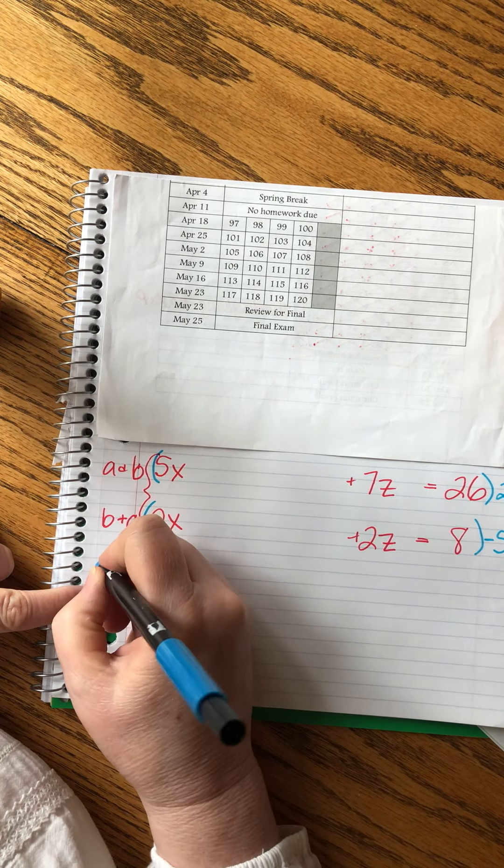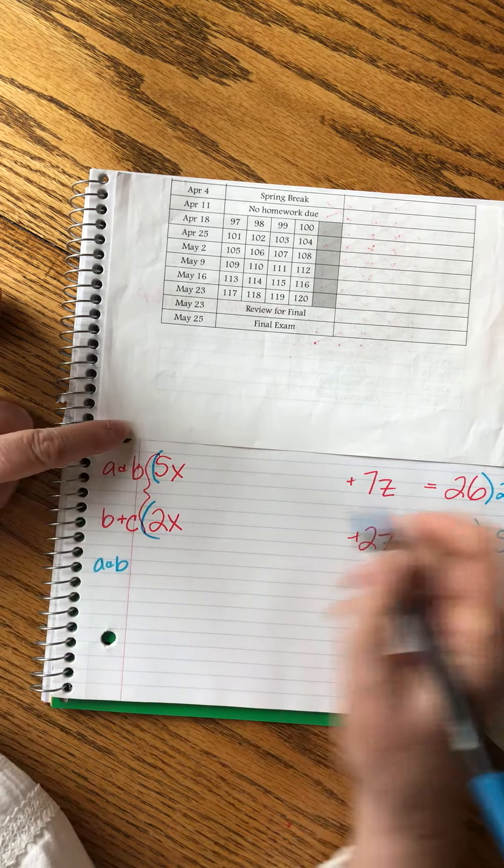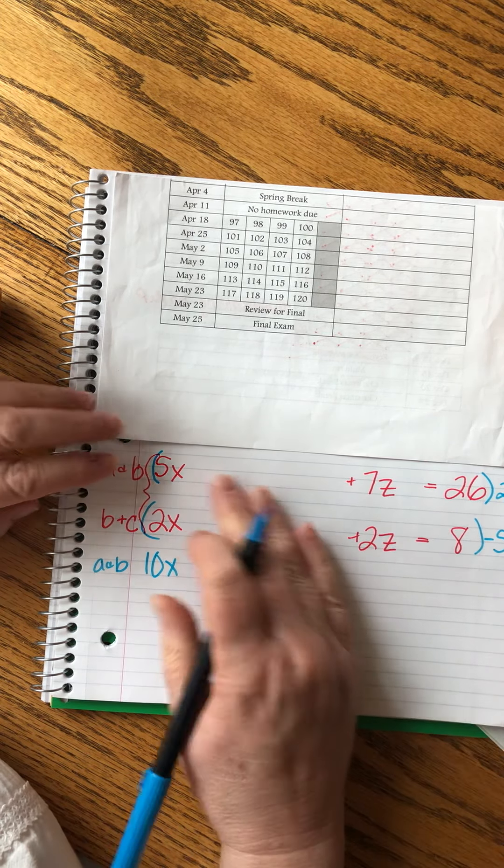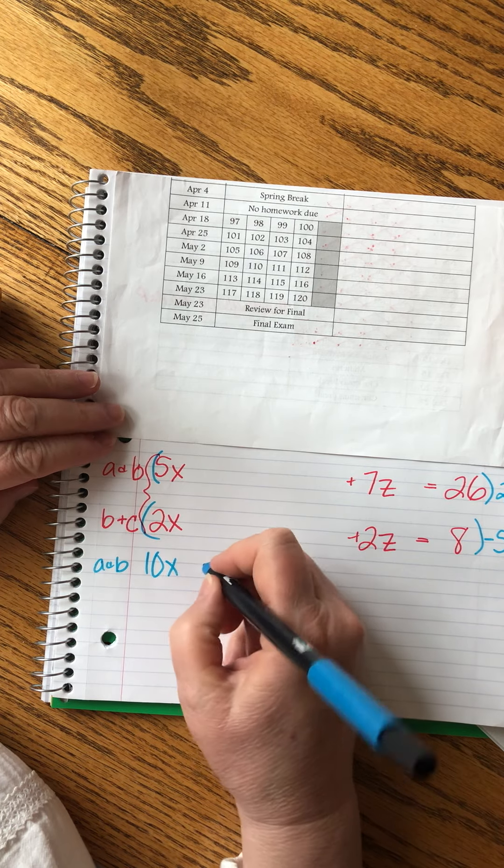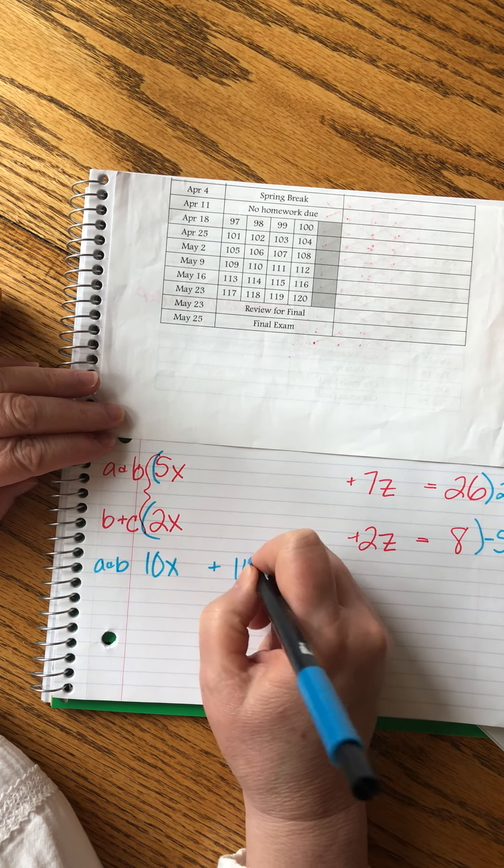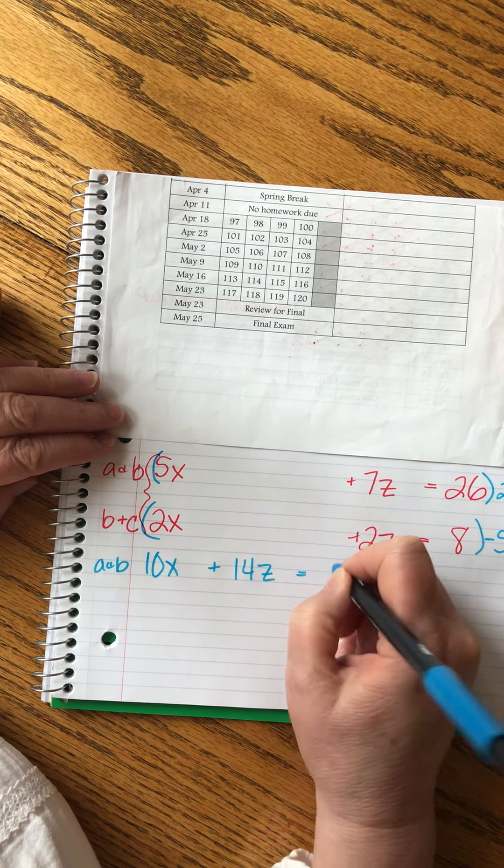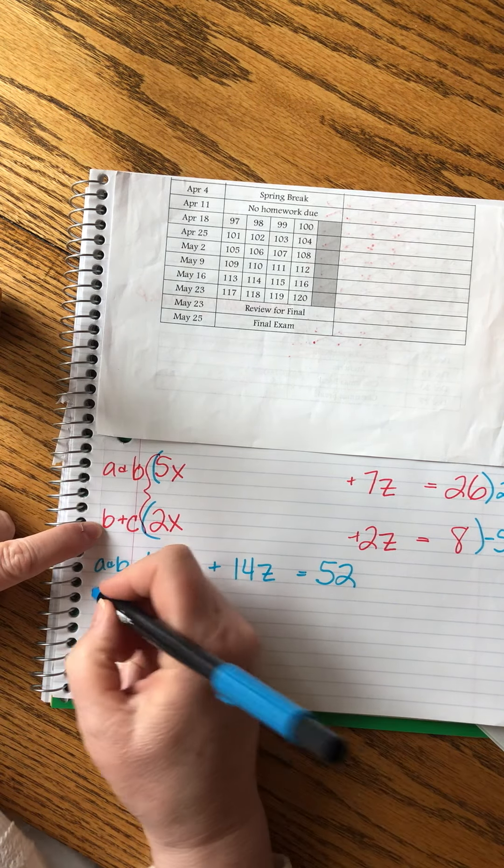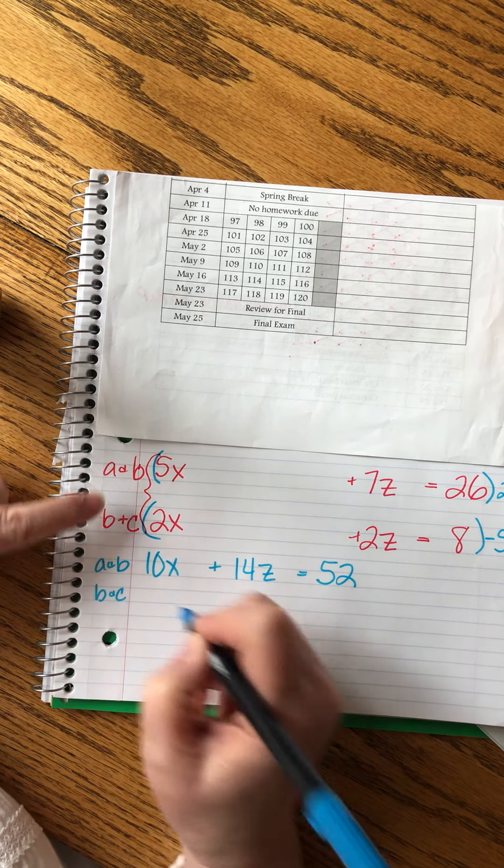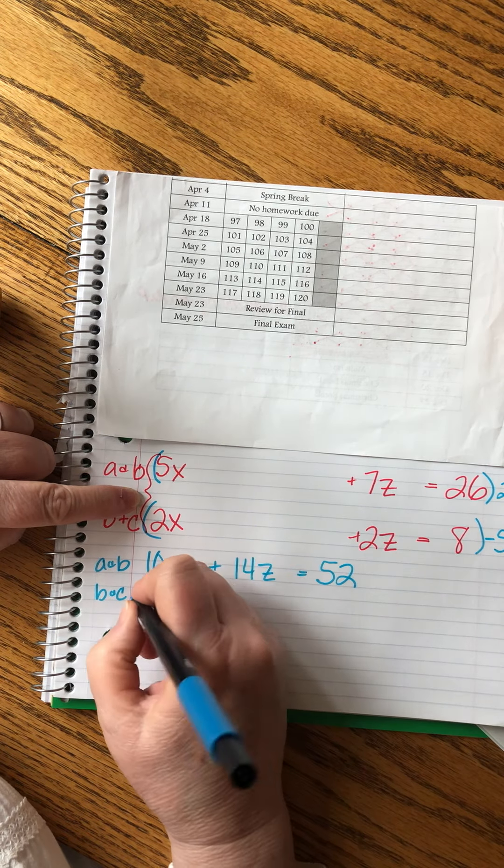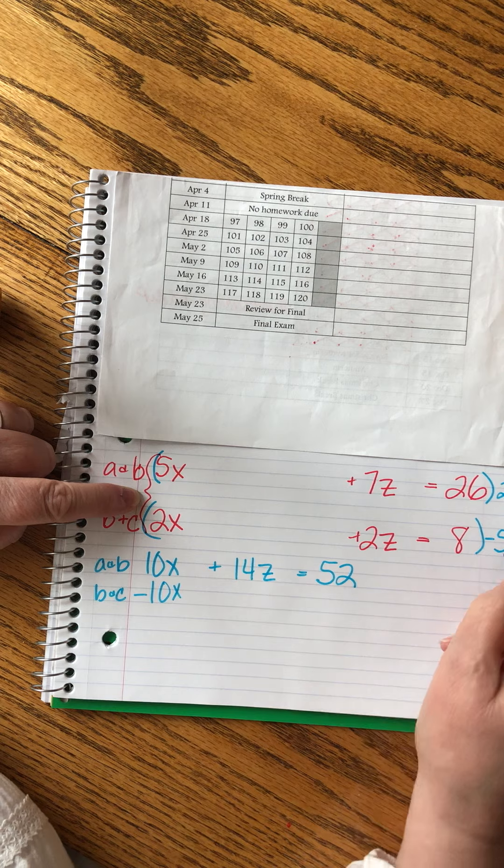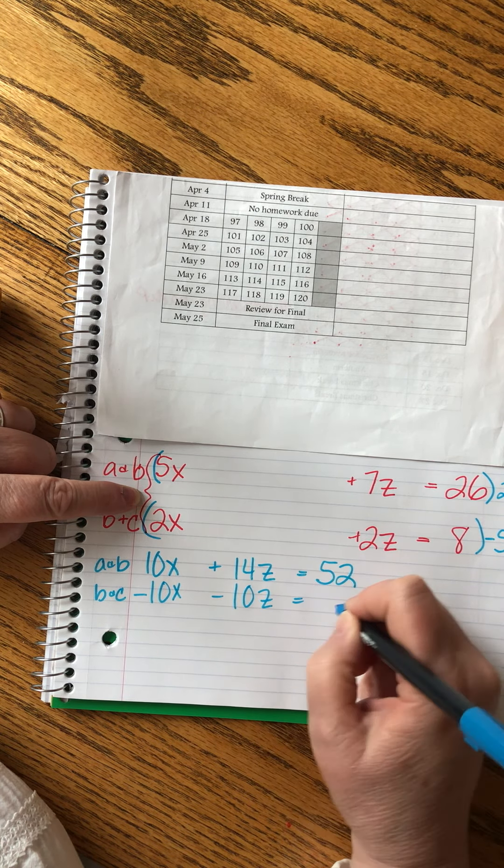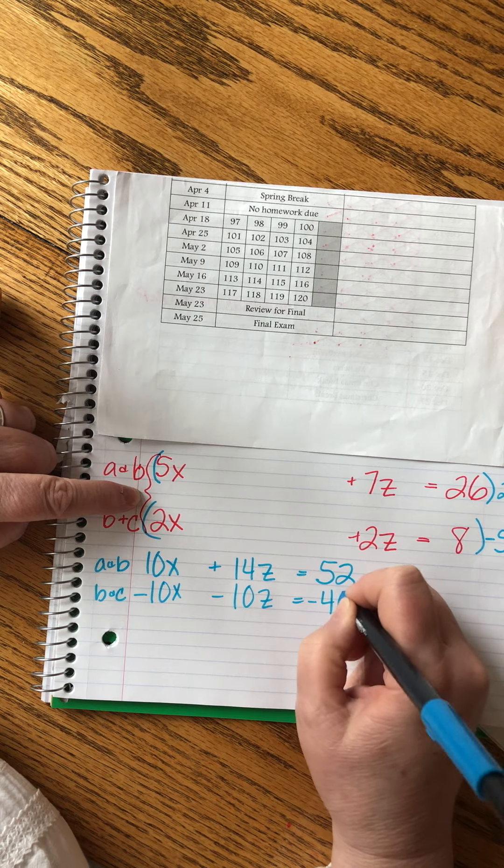Now I'm ready to multiply across. So my new A and B is 10x, and I'm going to bring it closer together. I don't need this big empty space anymore. Plus 14z equals 52. And then my new B and C is, I'm multiplying by minus 5, minus 10x minus 10z equals minus 40. Be careful with those wretched minus signs. They're so tricky.